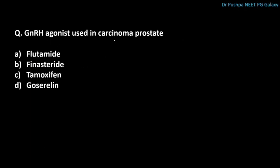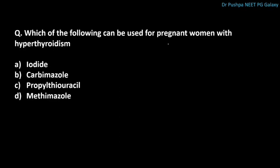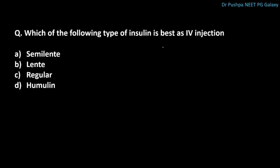Which GnRH agonist is used in carcinoma prostate? The correct answer is goserelin. Which drug can be used for pregnant women with hyperthyroidism? The correct answer is propylthiouracil. Which type of insulin is best as an IV injection? The correct answer is regular insulin. What is the principal stimulus for insulin synthesis and release? The correct answer is glucose.